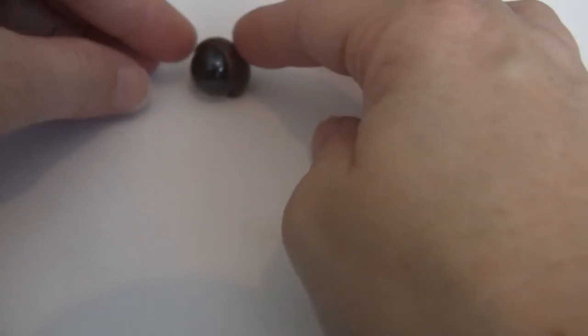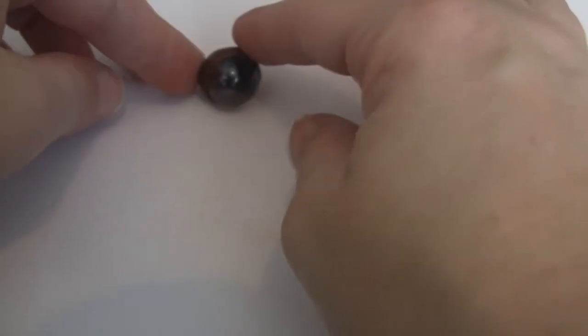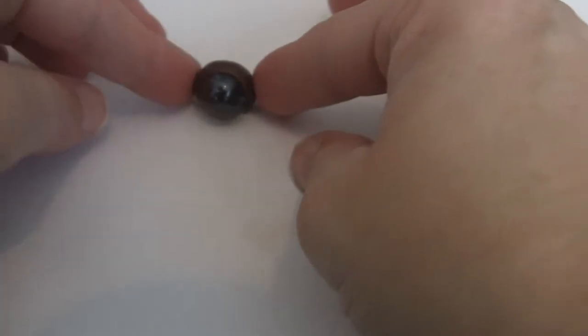The color I use is Burnt Umber from Primo. We're going to go ahead and bake it just like this, and we'll be back.